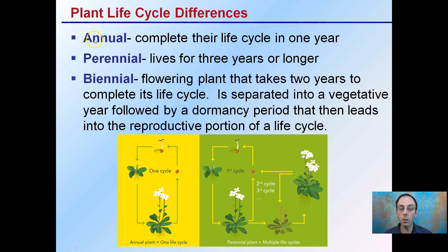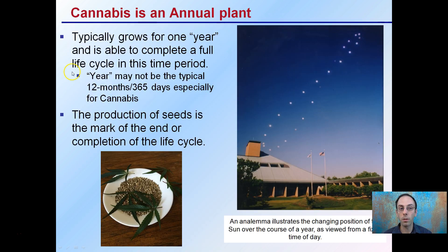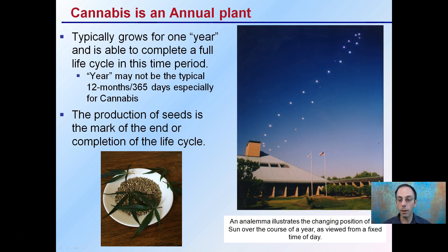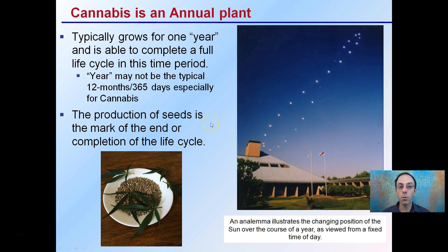Cannabis falls into the annual category, and we can see how it differs and changes from those other two types. Because cannabis is an annual plant, it typically grows for one year — and I put 'year' in quotes here because I don't want you to think that year means 365 days. Cannabis as an annual is able to complete a full life cycle in this time period.